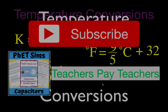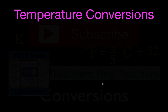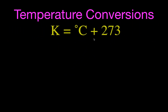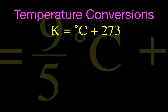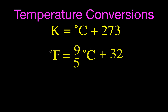Let's get started with temperature conversions. There are three common equations you're going to use. The first equation converts between degrees Celsius and Kelvin: Kelvin equals degrees Celsius plus 273. Sometimes you'll see 273.15, but we'll just use 273.